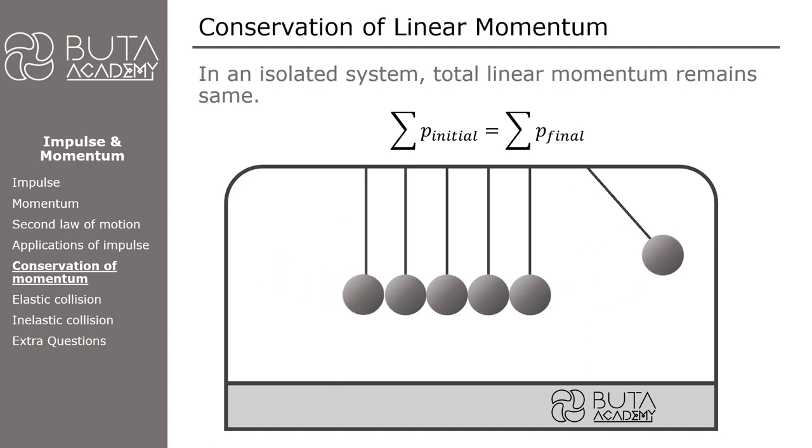On the animation on the screen, we can see a Newton's cradle. Initially, five balls on the right are at rest, only the leftmost ball is moving. Therefore, the total momentum of the system is equal to the momentum of this lonely ball. After collision, the ball on the left stops, and the rightmost one moves to the right with the same velocity as the first ball had just before the collision. And now, total linear momentum is equal to the momentum of the rightmost ball, as others are at rest.